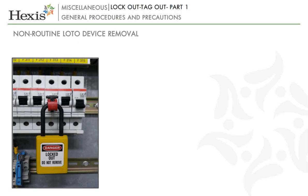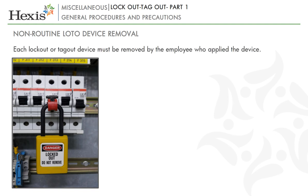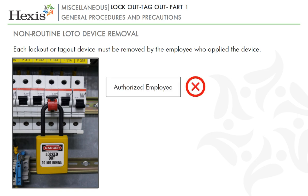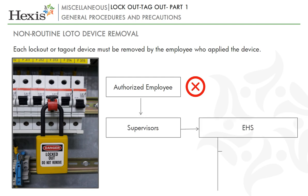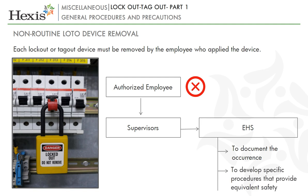Let us now see how to remove the LOTO device in case of absence of the authorized employee. Each lockout or tagout device must be removed by the employee who applied the device. When the authorized employee is not available to remove it, their supervisor must contact EHS to document the occurrence and develop specific procedures that provide equivalent safety.